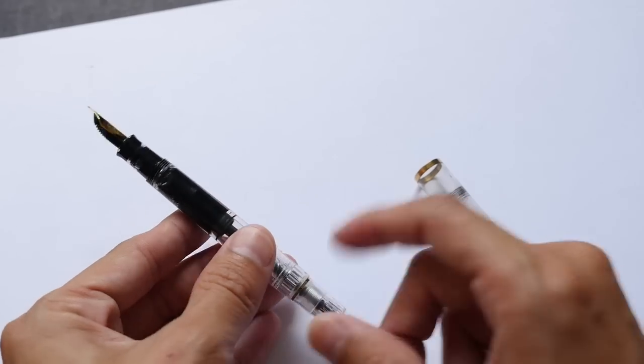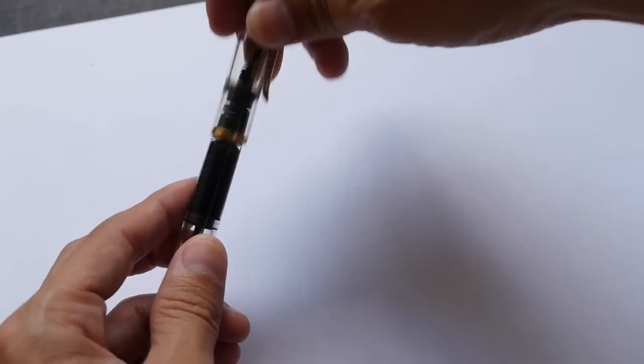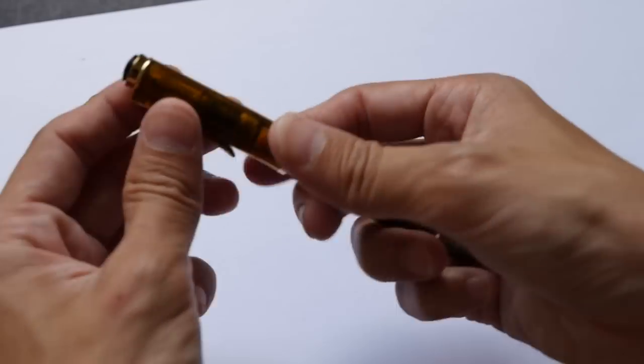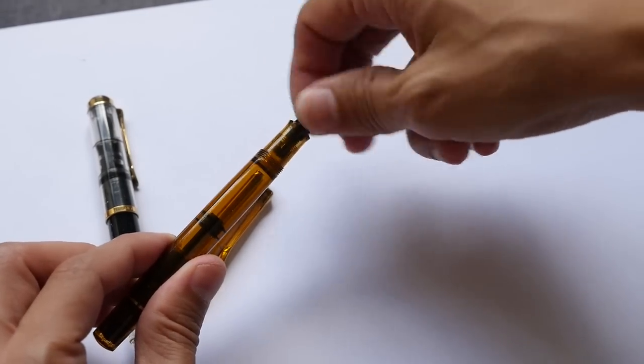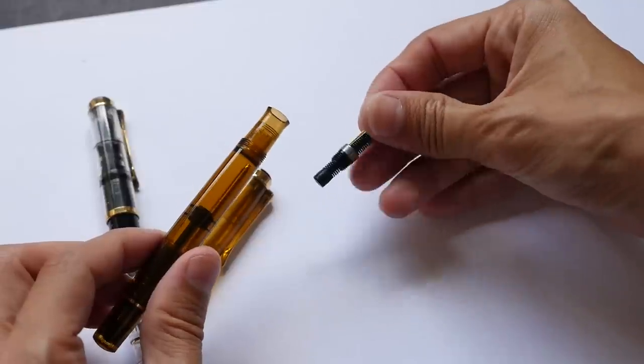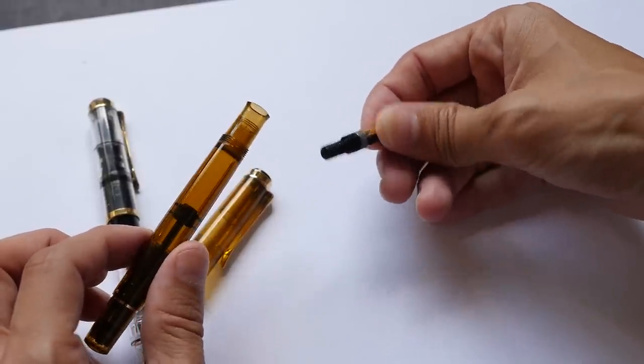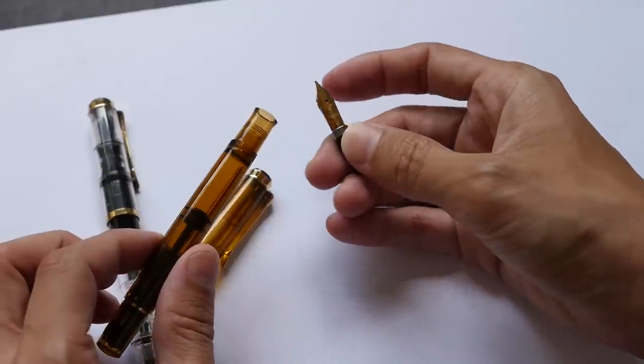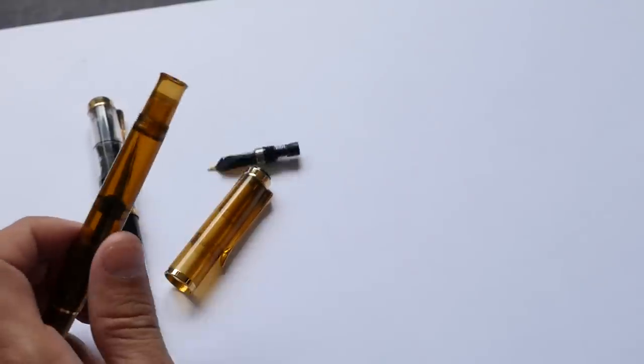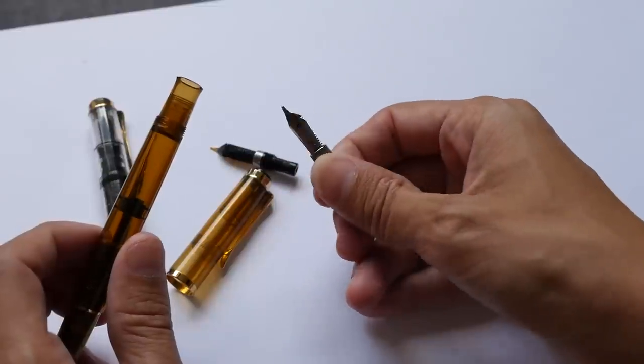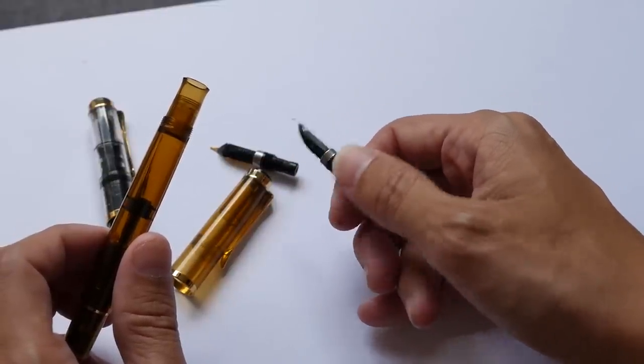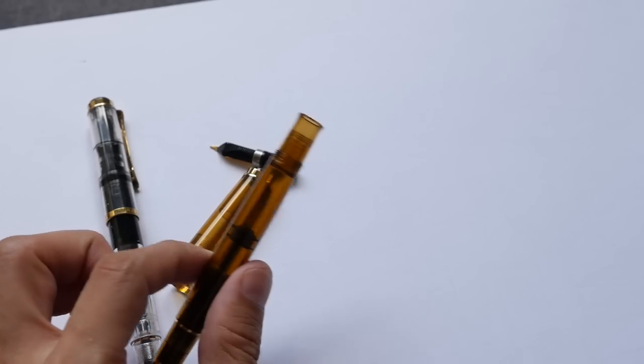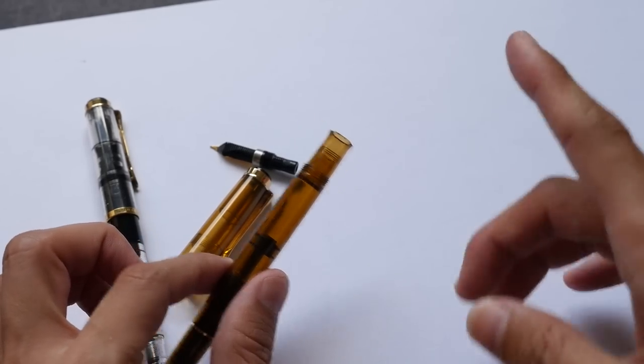You can dismantle this pen up to a certain point. Let me show you. Basically, you can just dismantle the nib section so you can swap nibs. These nibs are sold separately as well. This one is the extra fine nib, also gold-plated. I also have one for the broad nib. This one is just steel with no color to it.